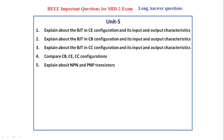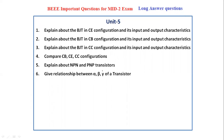Next, explain about the NPN and PNP transistor — draw the diagram of both and write the equations. Next, give the relation between alpha, beta, and gamma, which are the current gains of the common base, common emitter, and common collector configurations respectively. You have to relate what is the relation between alpha and beta, and between alpha and gamma.